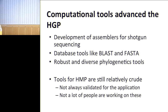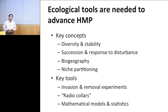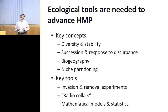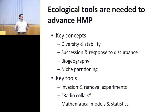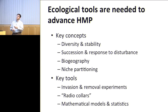We also need ecological tools to advance the Human Microbiome Project, because we are ultimately dealing with ecology. The sequencing centers say if we just sequence enough, we'll eventually get the right answer — but that's not the case. We really have to think about key concepts of diversity and stability, succession and response to disturbances, biogeography, and niche partitioning. A paper came out on colonization of the infant intestinal tract that didn't mention the words succession, disturbance, or perturbations at all. Yet if we want to understand things like disease, we need to understand biogeography — why we see certain bugs in certain places, why everybody has a different gut community.